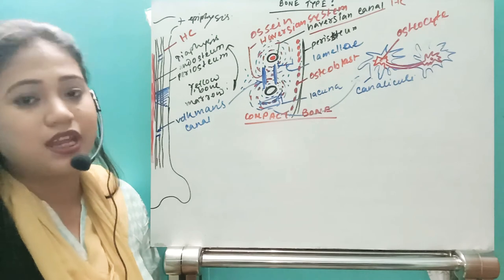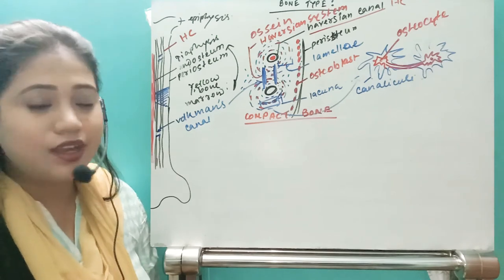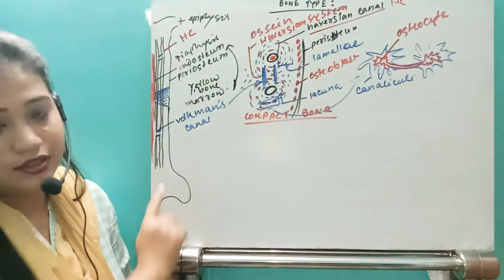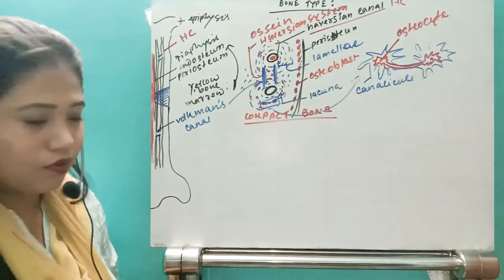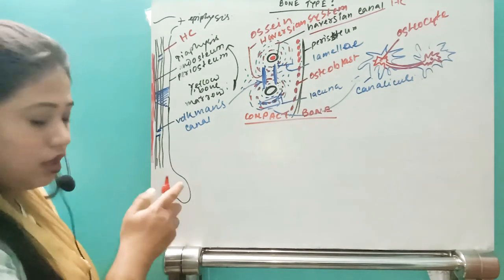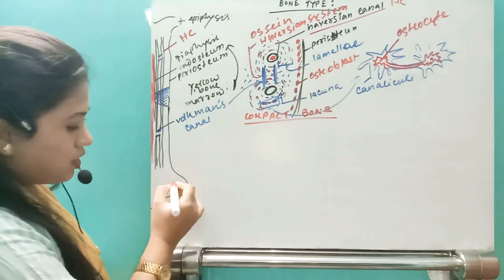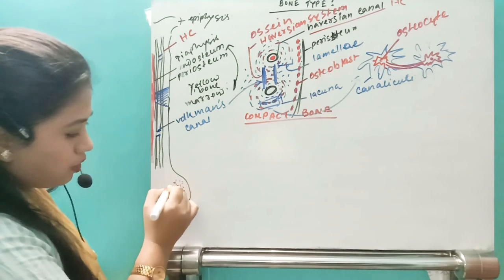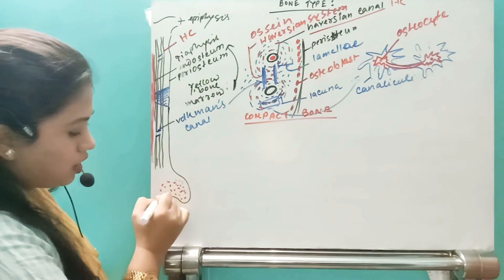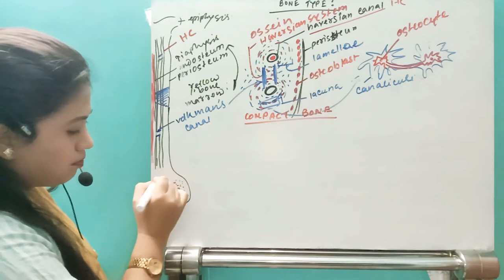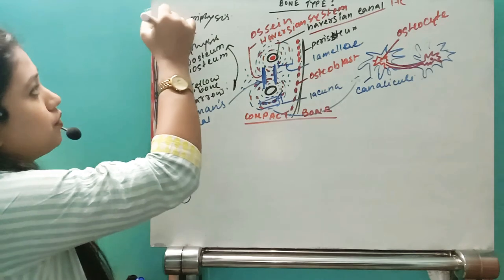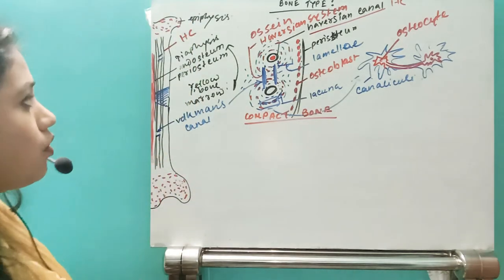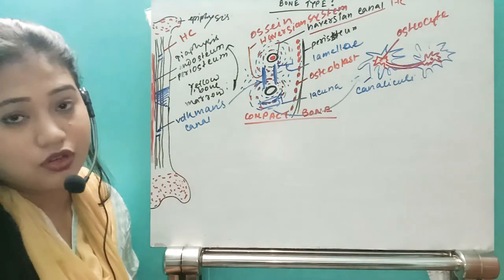Now let us move to the next part — that is the spongy bone. The spongy part is present in the epiphysis. Whenever we see a bone towards the edges, we will find some branch-like structures. That is the spongy part. So how does the spongy bone structure look like?